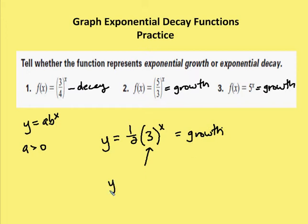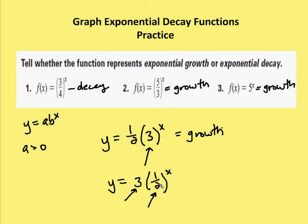What about y = 3·(1/2)^x? Again I look at the b value — three is the a value. The a value must be greater than zero for it to be either growth or decay, and in this case it is. But the a value does not affect whether it's growth or decay. The b value, one-half, is between zero and one, so this represents a decay function.